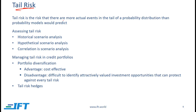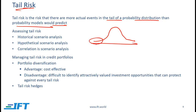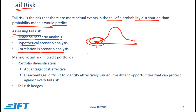Tail risk is the risk that there are more actual events in the tail of a probability distribution than probability models would predict. Most probability models are based on a normal distribution, but in reality there are often more extreme events than predicted. We can assess tail risk using scenario analysis — either historical scenarios such as the 2008-2009 crisis, or hypothetical scenarios. An important consideration is that correlations increase during times of economic crisis.